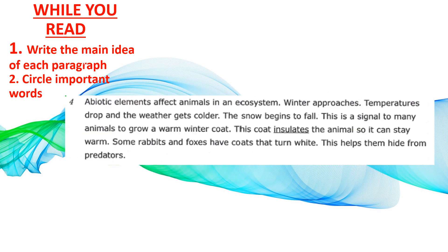Paragraph 4: Abiotic elements affect animals in an ecosystem. As winter approaches, temperatures drop and the weather gets colder. The snow begins to fall. This is a signal to many animals to grow a warm winter coat, which insulates the animal so it can stay warm. Some rabbits and foxes have coats that turn white, which helps them hide from predators.